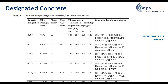Table 6, from BS8500 Part 2 which is for the concrete producer, tells the producer for a specific concrete designation — for example RC-2025 — what the strength should be, what the standard slump class is (although you're allowed to modify that), the maximum water cement ratio, the minimum cement content, and the types of cement that can be used within that designated concrete.